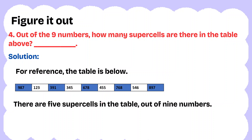Question 4: Out of the 9 numbers, how many supercells are there in the table above? As we have observed, out of the 9 numbers, there are 5 supercells.